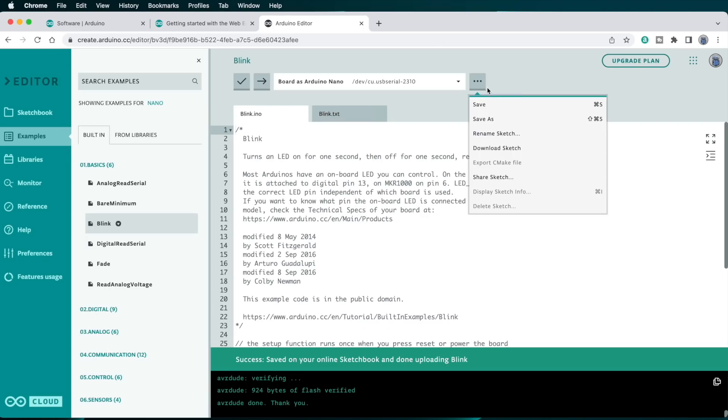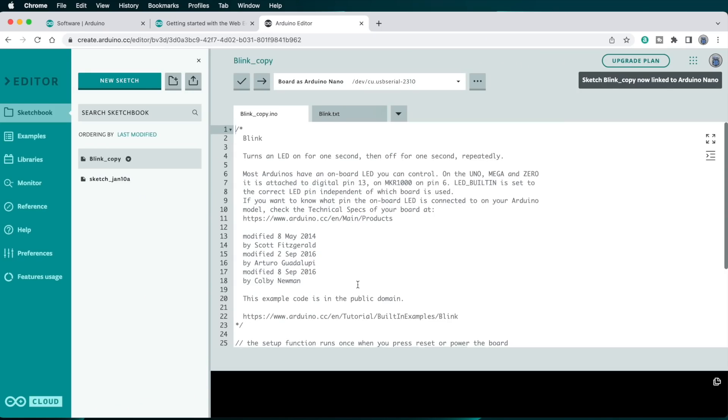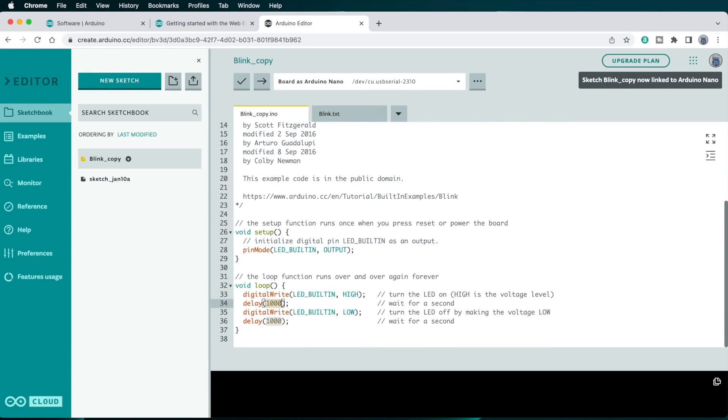If you want, you can save the sketch to your sketchbook with this three-dot menu here. And once you've done that, you can edit the sketch to modify its behavior. For instance, by changing the delay values from 1000 to 100, and then uploading the sketch to your Nano, that'll make the LED blink ten times faster.